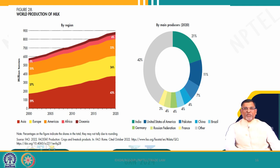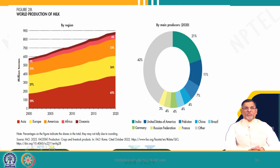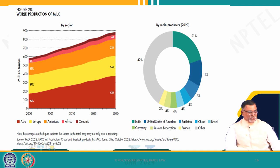When it comes to milk, Asia is the largest producer, and within Asia, India is the largest producer of milk with 21 percent of world production. However, India is also the largest consumer of milk, so we are not exporting milk. Other producers include the United States, Pakistan, China, Brazil, Germany, Russian Federation, France and others. As a whole, Asia is the largest producer of milk, then Europe, America, Africa and Oceania. India and the US together constitute almost more than 30 percent, and India, US and Pakistan together constitute almost 40 percent of milk production.